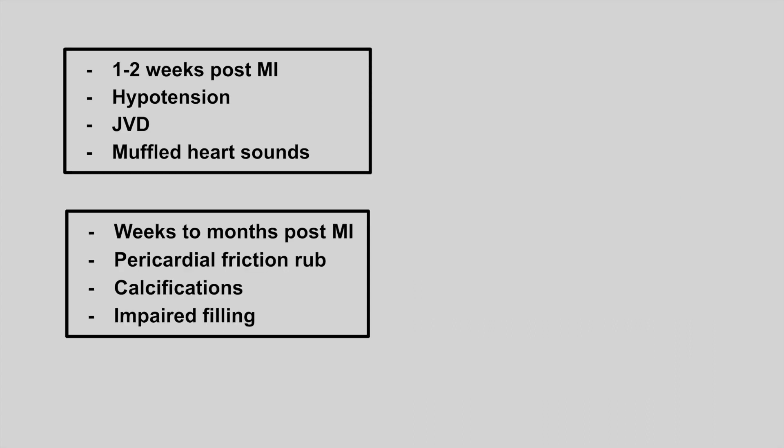The next one is someone who presents 1 to 2 weeks after an MI with hypotension, jugular venous distension, and muffled heart sounds. This is left ventricular free wall rupture.